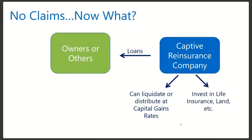If there aren't any claims back in the operating company, the client has now created a profit center on a tax-advantaged basis. They get an ordinary deduction when they move the premium into the company, and they'll take the money out as loans and eventually at capital gains rates when they liquidate the company. This really is a great way for a profitable business to account for the risk in their business, receive a tax deduction for covering those risks, and in the end create a profit center that can help them grow their business or branch out into other opportunities.